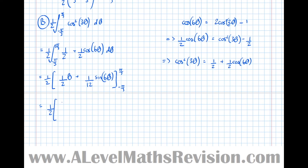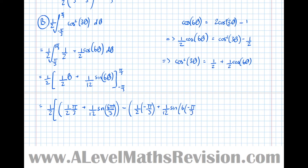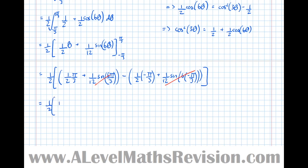Integrating gives one half times [one half theta plus one twelfth sin of six theta] evaluated between pi over three and minus pi over three. Subbing in the limits: sin of six pi over three equals sin of two pi equals zero, and likewise at the lower limit. This gives one half of (pi over six minus minus pi over six) equals one half of pi over three, which equals pi over six. Therefore the total area is pi over three plus pi over six, which equals pi over two.